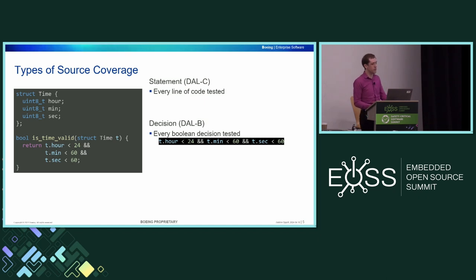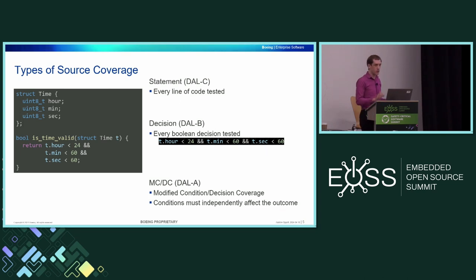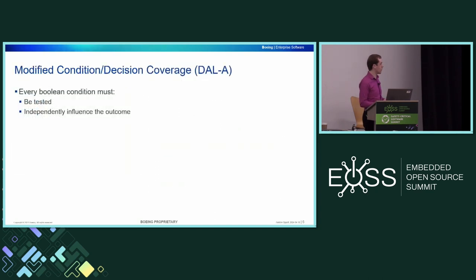Next up, MCDC, or modified condition decision coverage. This requires that you look at the actual conditions inside the decision. This decision has three conditions: the hour check, the minute check, and the second check. MCDC coverage requires that you look at those individual conditions, check that they evaluate to true and false, and then show that they independently affect the outcome. On the next slide I'll go into more detail about what that actually means.